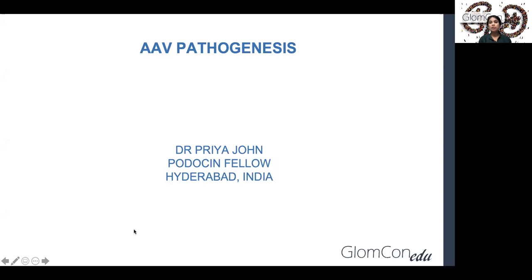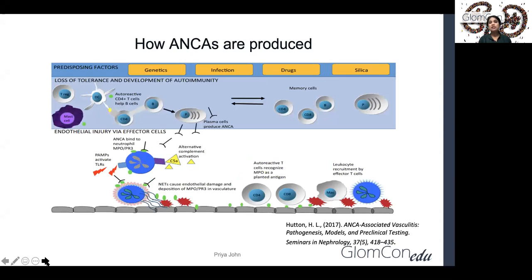Antineutrophilic cytoplasmic antibodies are the autoantibodies which are directed against the cytoplasmic antigen present in the primary granules of neutrophils and lysosomes of monocytes. These antibodies are primarily directed against myeloperoxidase and protein PR3 of neutrophils, and antibodies are primarily IgG immunoglobulin class.